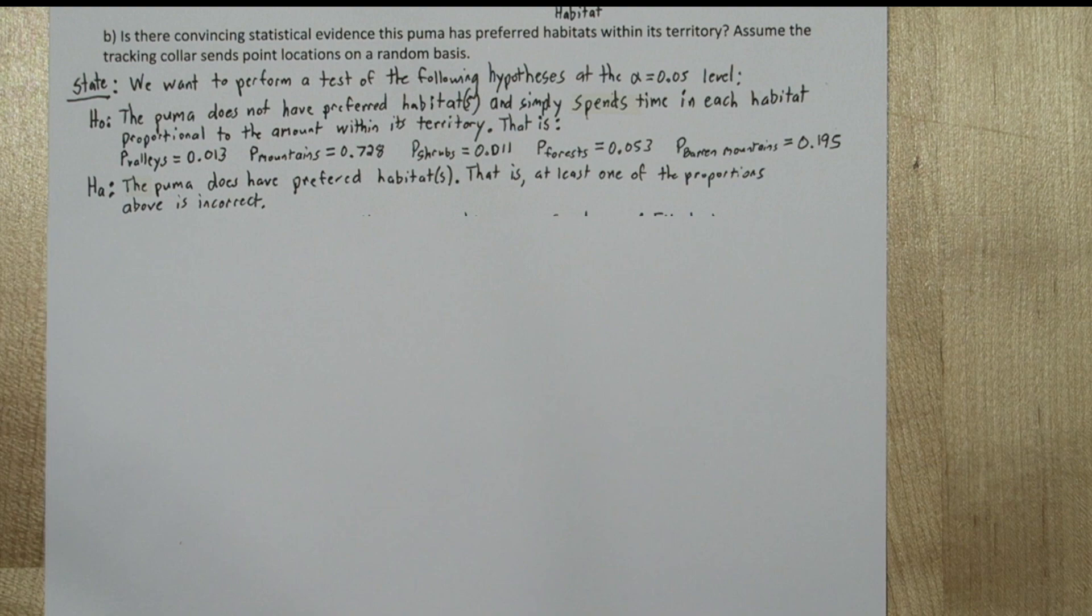Now we're checking how well the puma's point locations matched the habitat we know about. So we're going to use a chi-squared goodness of fit test. We're going to see how well our observed data fit our expected data.